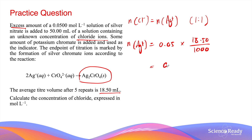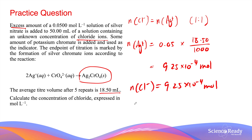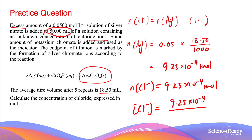This gives us 9.25 × 10⁻⁴ moles. And as we said, this is also the number of moles of chloride ions. We can then find the concentration of chloride ions by dividing the number of moles by the volume of the solution that we analyzed, which was 50 millilitres. This gives us 0.0185 mol per litre.